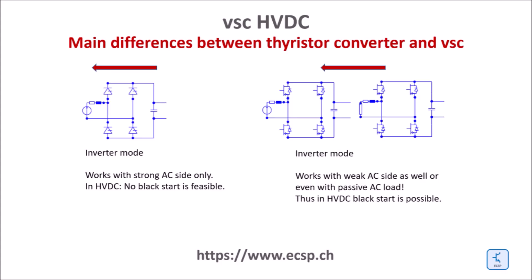First, a thyristor inverter can work with a strong AC side only; otherwise the commutation between one leg of the bridge and the other leg does not work. The commutation is needed because one leg is fired whilst the other leg is still conducting. Thyristors interrupt current only when it passes zero, thus an AC source is needed for commutation.